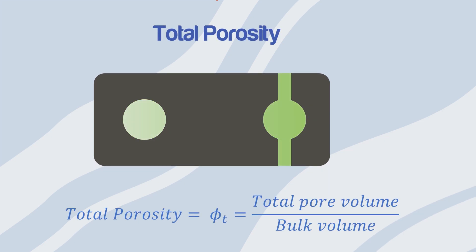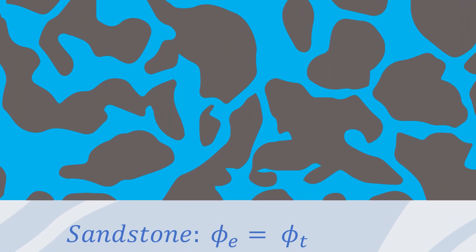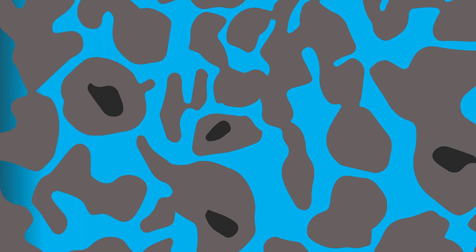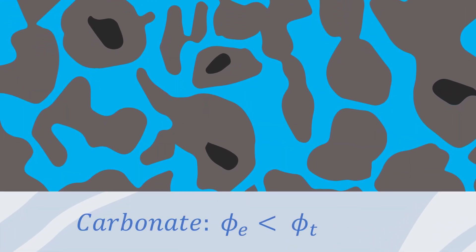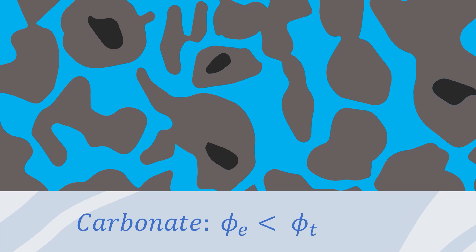Usually in sandstones, total porosity equals effective porosity, as they are relatively homogeneous rocks. Carbonate rocks, on the other hand, usually have total porosity greater than effective porosity, since carbonates are typically heterogeneous.